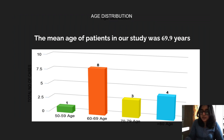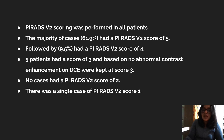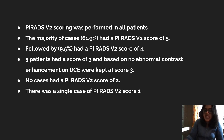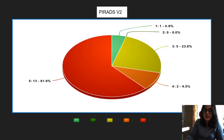The mean age distribution was 69.9 years. PIRADS Version 2 scoring was performed in all patients. The majority of cases — around 61.9% — had a PIRADS score of 5, followed by a score of 4 at around 9.5%. Five patients had a score of 3, based on no abnormal contrast enhancement on dynamic contrast enhancement, and were kept at 3. No cases had a score of 2, and there was a single case with a score of 1.